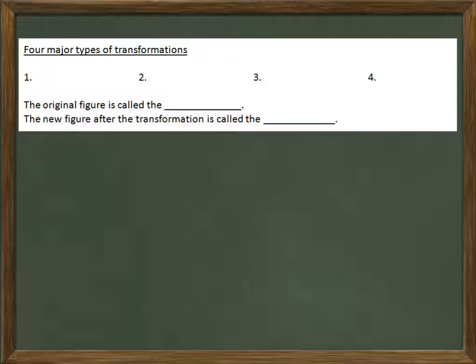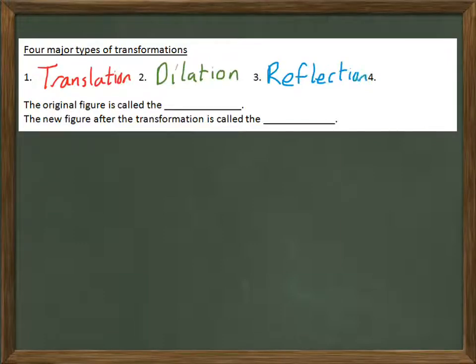Translations are just one of four major types of transformations. When I say transform, that implies we're changing geometric figures in some way. You've learned about these in middle school. The four types of transformations are translations, dilations, reflections, and rotations.